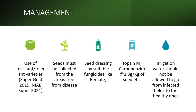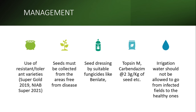Resistant varieties include Super Gold 19 and Super 21. Seed must be collected from areas that are free from disease. Seed dressing with suitable fungicides such as Thiram M or Carbendazim can be used to treat the seed. Additionally, irrigation water should not be allowed to flow from infected fields to healthy ones.